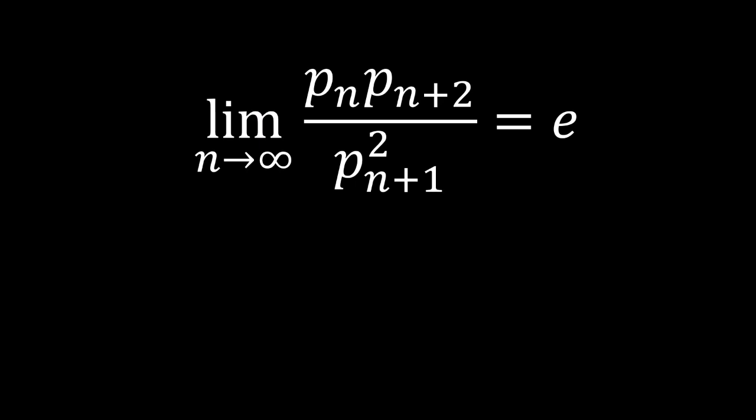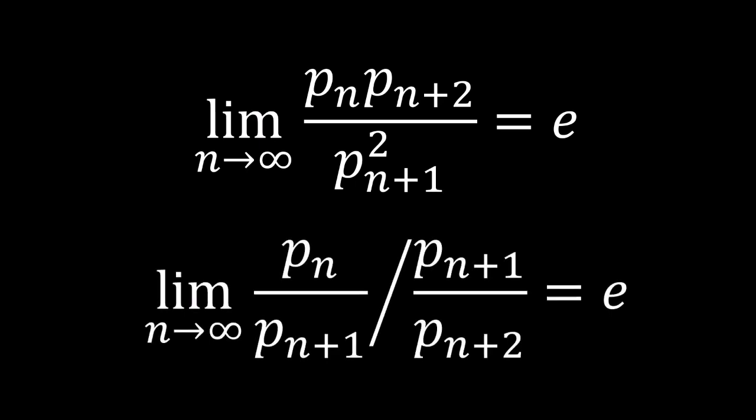Actually let us unpack this fraction a little bit and it will turn out to be less mysterious than you think. This is basically saying that we take the ratio of adjacent row products and then we take the ratio of that ratio and this term actually is the one that converges to e.